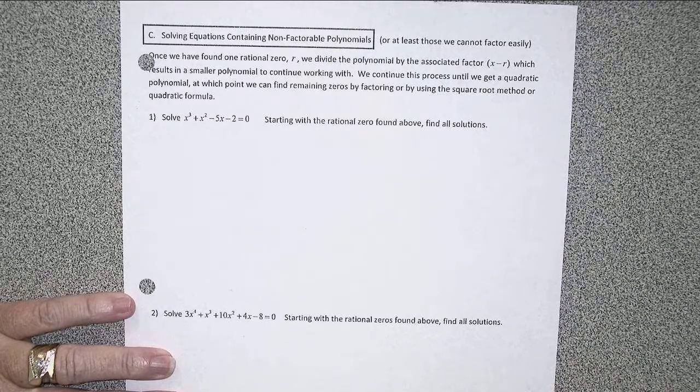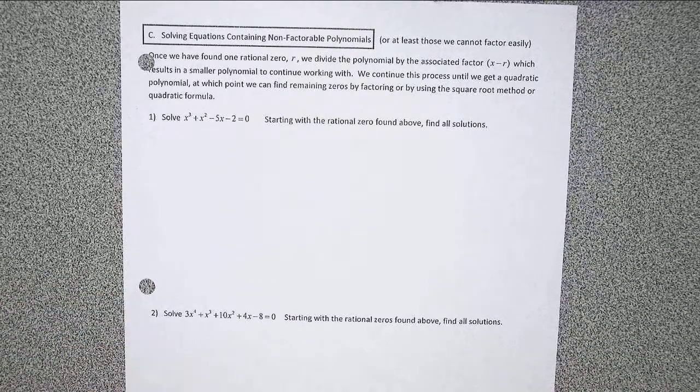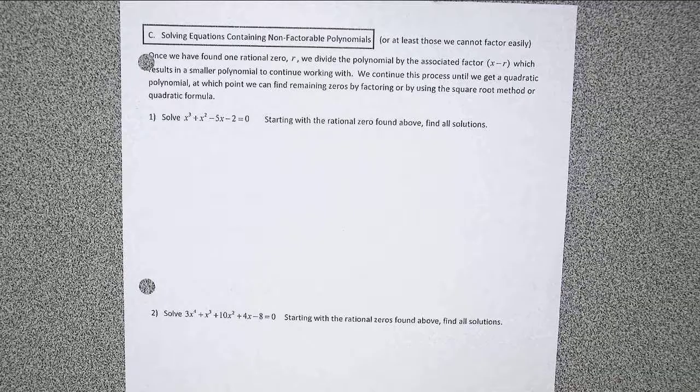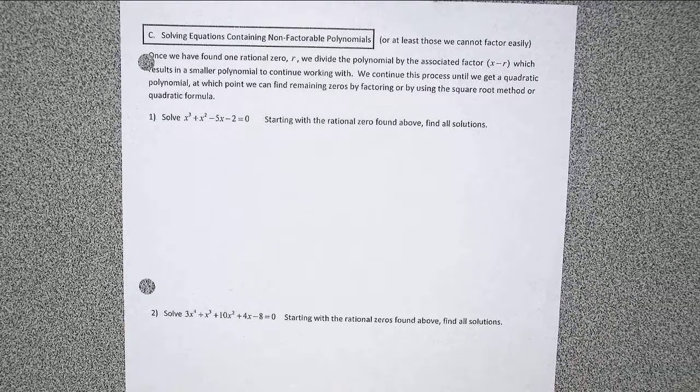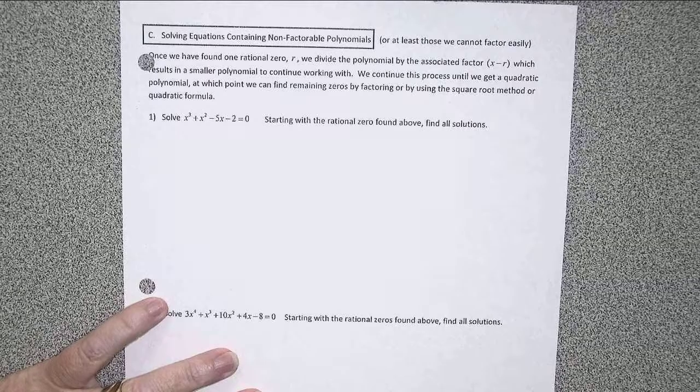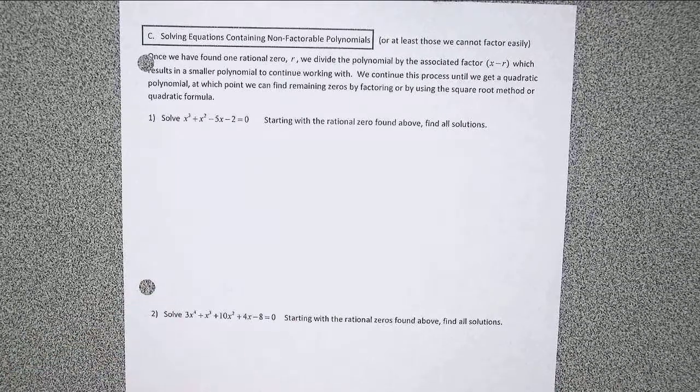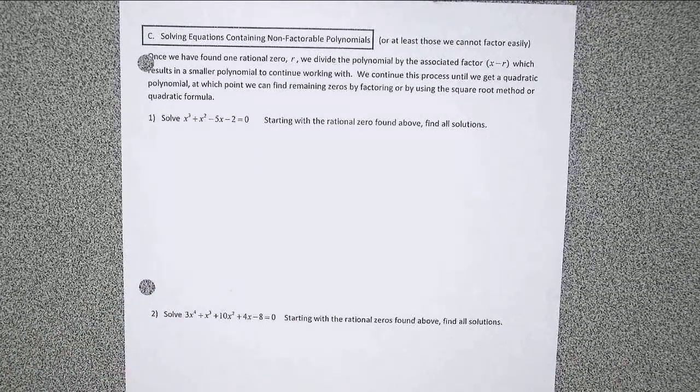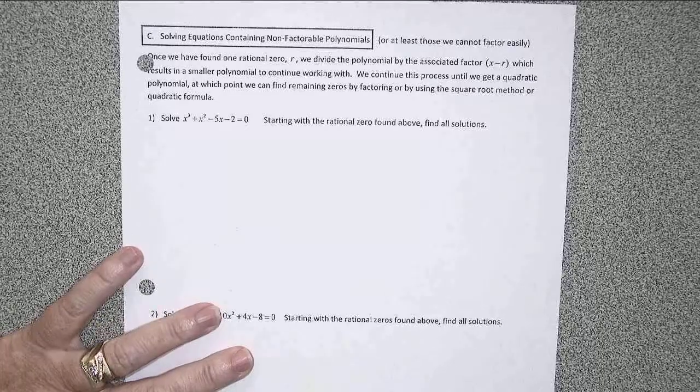This is Math 139, Section 2.4c. We've seen how to find the rational zeros using the rational zeros theorem. We've also seen that we aren't in general finding all the zeros we expect using this process.